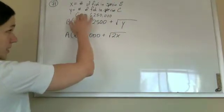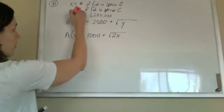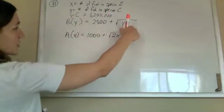So when they tell you that the number of fish in species C is that number, that's basically saying that Y is that. Then they give you an equation. B of Y is this thing.